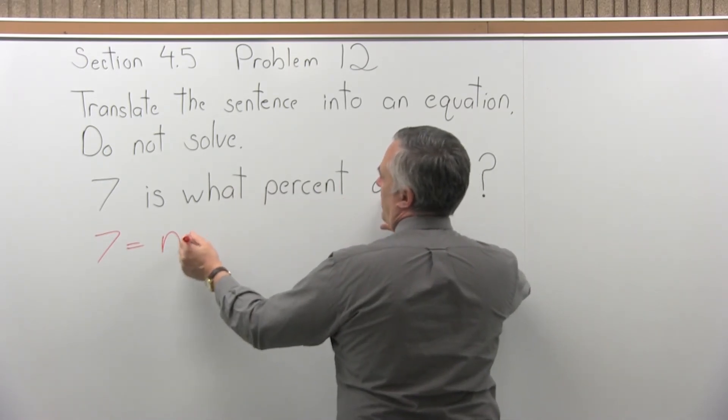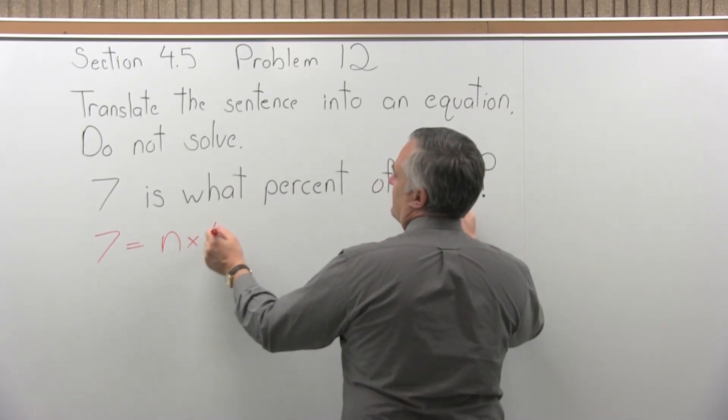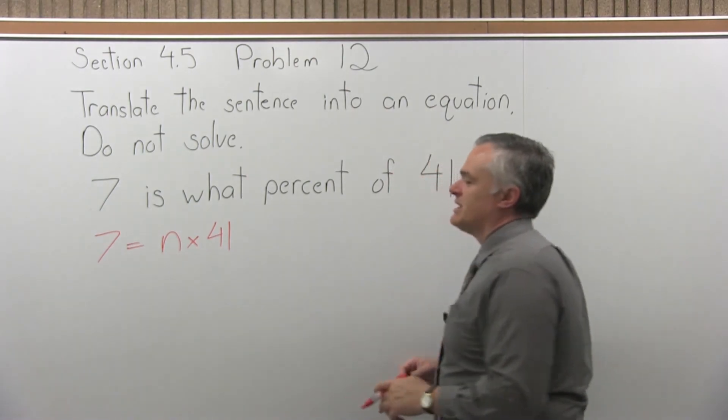Of is going to mean multiply, so n times, and then 41. So 7 equals n times 41.